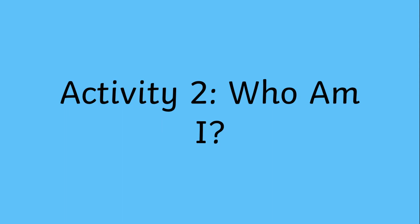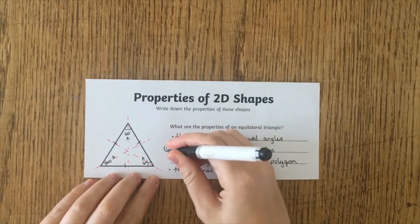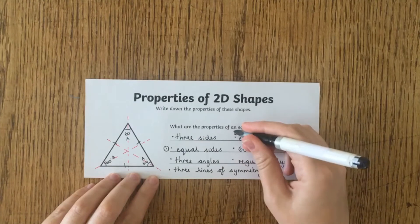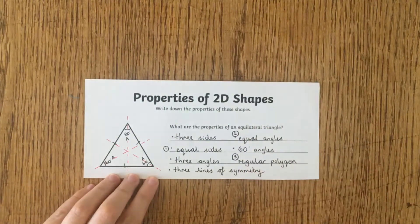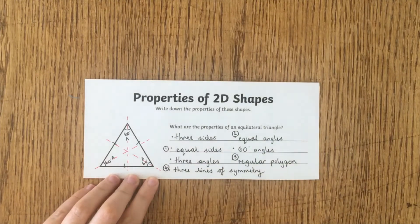Next, challenge learners to turn their list of properties into a who am I riddle. Learners will need to apply their knowledge of all the shape properties to identify which clues are ambiguous and which only apply to their shape.